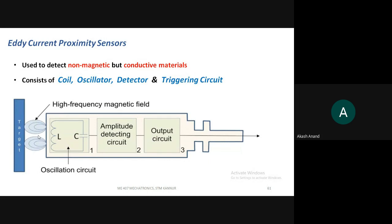The working principle is that a circular current will be induced in a conductor when it is placed in a changing magnetic field. Imagine the high-frequency magnetic field produced here as a changing magnetic field. If a non-magnetic type conductor is placed here, a circular current called eddy current will be induced in that conductor.